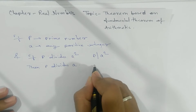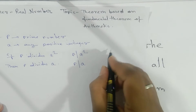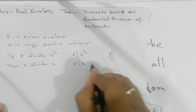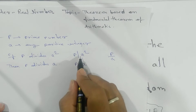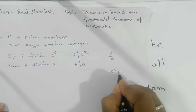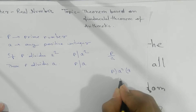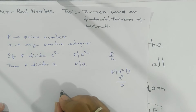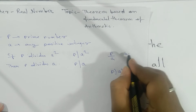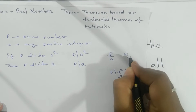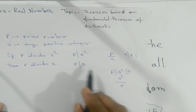We write this as: P divides a squared implies P divides a. Please do not mix this with P by a — these are totally different. P divides a means when you divide a squared by P, you will get remainder 0. But P by a means a is the divisor and P is being divided.